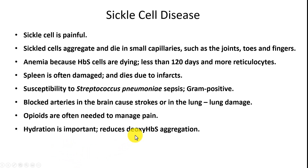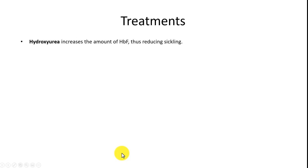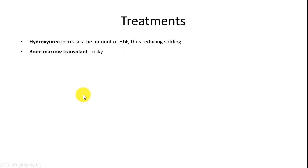Hydration is important because it reduces the concentration of deoxy HBS inside the red blood cells and can prevent aggregation — patients should drink plenty of water and stay well hydrated. Dehydration causes red blood cells to shrink and tend to aggregate. Hydroxyurea treatment increases the amount of HBF, fetal hemoglobin, thus reducing sickling. Children born with sickle cell anemia have no problems early on due to high HBF levels, but as HBF is replaced by HBS, sickling begins. Bone marrow transplants can treat severe cases but remain very risky.